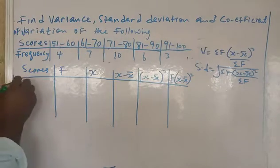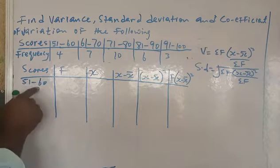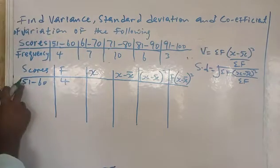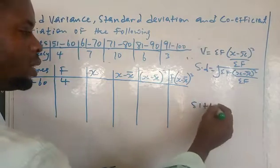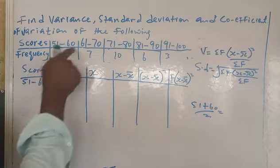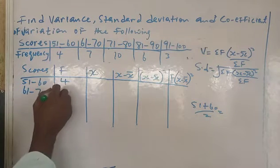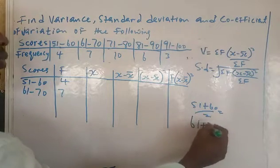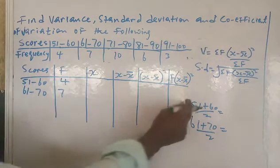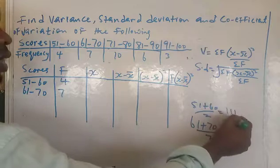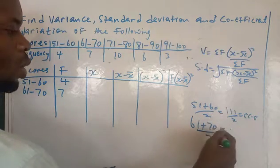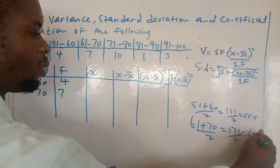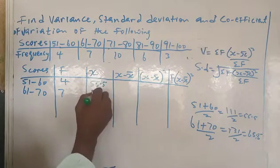Starting from the first score range: 51 to 60, frequency is 4. To get x, add the two endpoints and divide by 2: 51 plus 60 divided by 2 gives 55.5. For 61 to 70, frequency is 7, and 61 plus 70 divided by 2 gives 65.5.